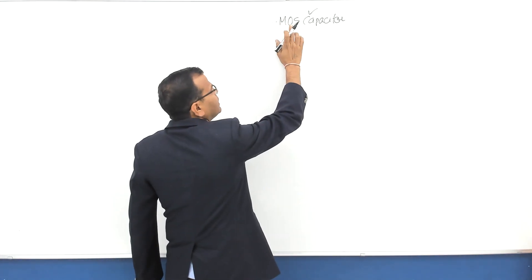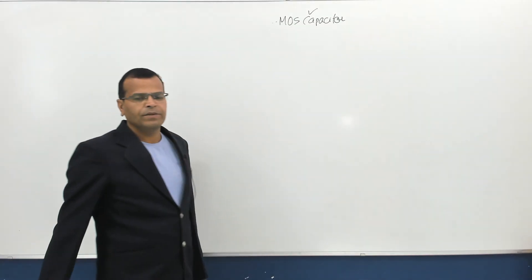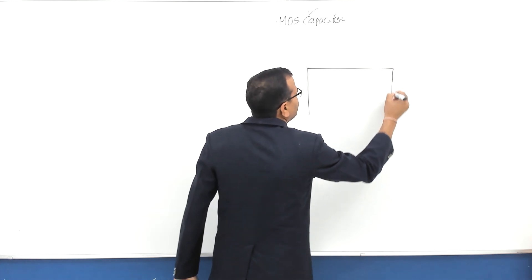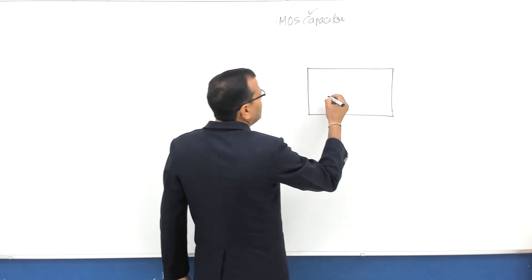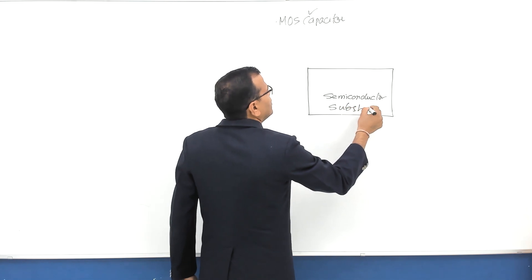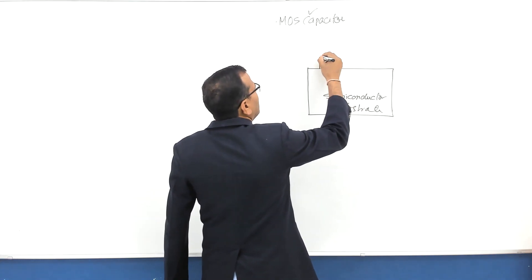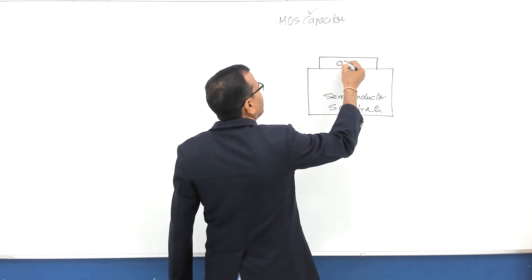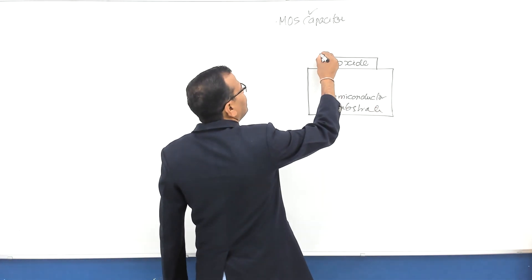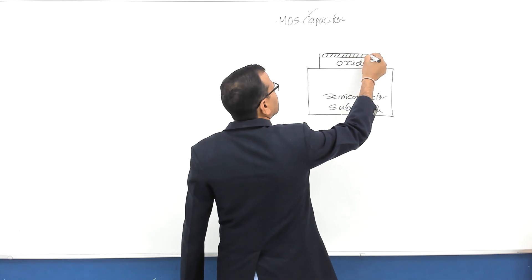MOSFET: M stands for metal, O stands for oxide, S stands for semiconductor — metal oxide semiconductor. Let us see the layer diagram. In a metal oxide semiconductor, we have a substrate made of semiconductor — this is the semiconductor substrate. Above the semiconductor substrate we have a layer of oxide, which may be silicon dioxide SiO2.